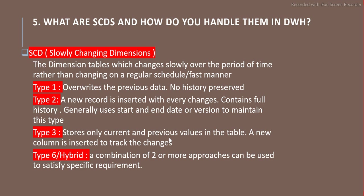Type 3 stores only the current and previous value of the attribute — basically partial history, only two instances: the previous change and the current change. To store this we do not insert multiple rows; instead we create two columns — an old value column and a current value column — and insert into those columns. Type 2 stores the entire history; Type 3 stores only partial history. Type 6 — or hybrid — is basically a combination of Type 1, Type 2, and Type 3, or more than two of them together.